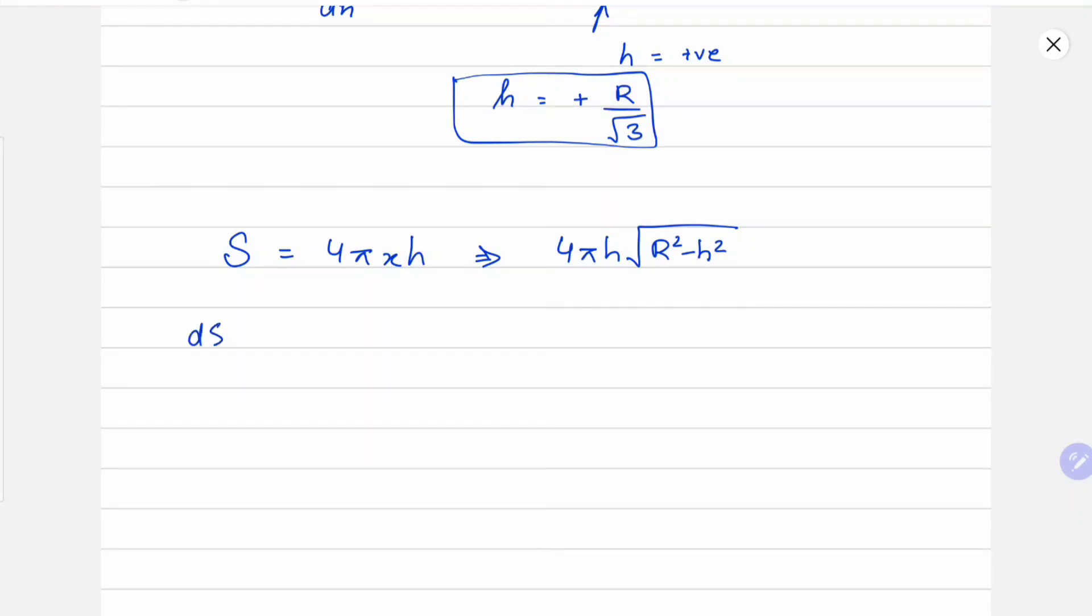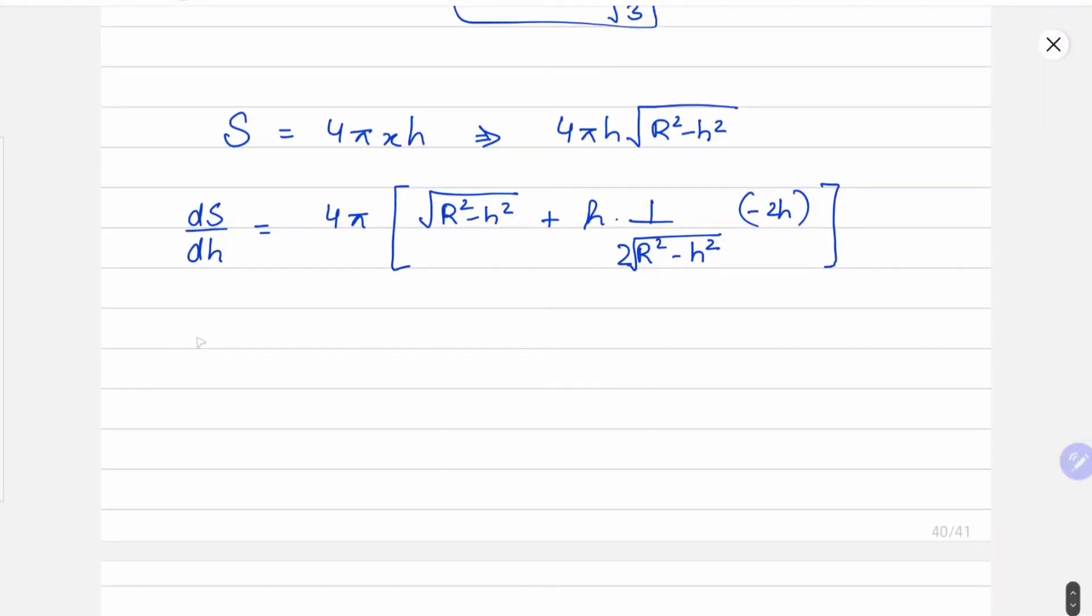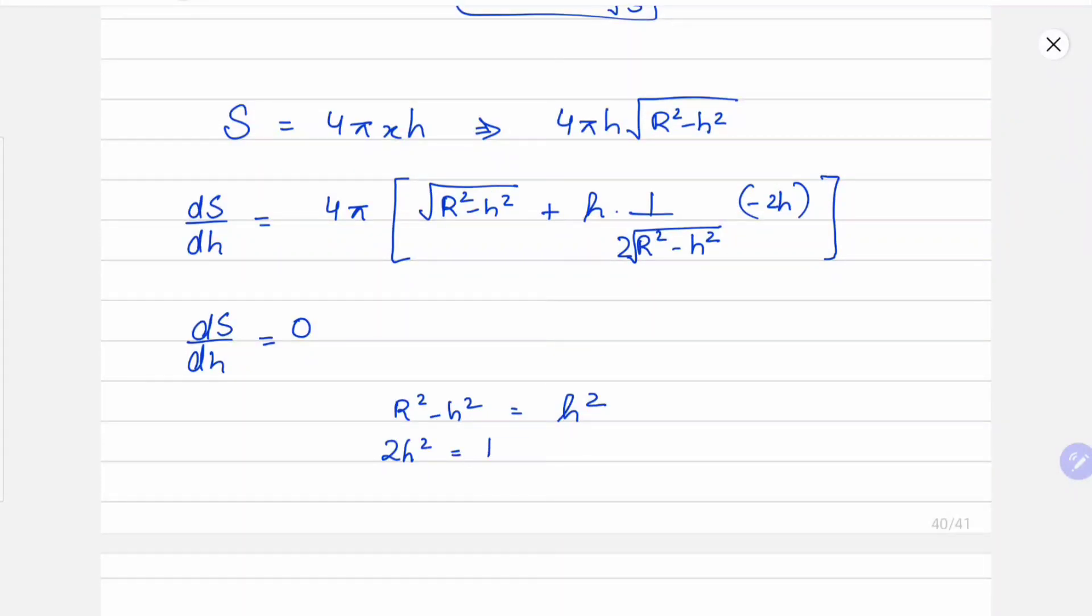Now on differentiating s, we get 4π√(R² - h²) plus h times 1/(2√(R² - h²)) times 2h. I hope by now you know how to differentiate properly. We can simplify this and put it equal to 0. 4π will cancel out on both sides, and finally we get R² - h² equals h², which gives us 2h² equals R², where we finally get h equals plus or minus R/√2. Using the same approach, we will get h equals plus R/√2.